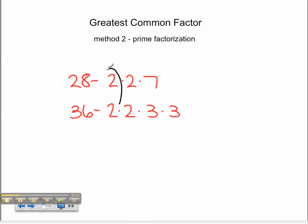Let's find the common factors. It looks like we have two sets of 2 in common. So 2 times 2 is 4. Therefore, the greatest common factor equals 4.